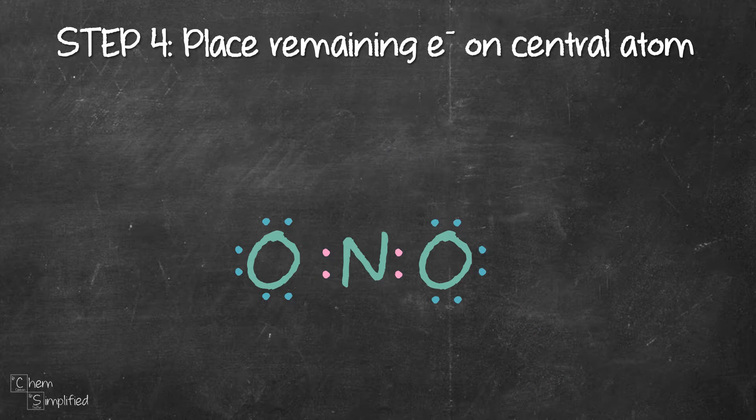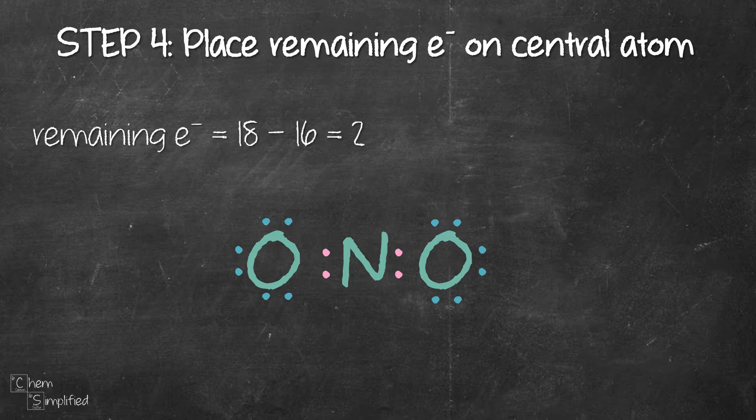Step 4, we need to place any remaining electrons on the central atom. Since we started with 18 electrons, we have already used 16. That means we have two remaining electrons. We'll place the two electrons on nitrogen like this.